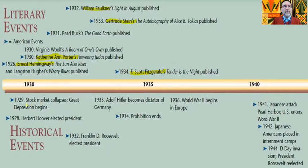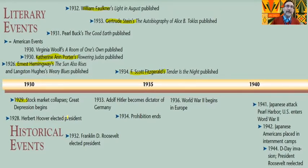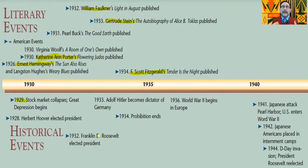By 1929, the Jazz Age ended. Things had been going great economically, a flowering of every business possibility — and then the stock market collapsed, beginning the Great Depression. Herbert Hoover had been elected president and would get blamed for a lot of what didn't happen during the Depression. Hitler came to power just a year before Roosevelt was elected. Roosevelt would become America's only president elected to four terms. No other president had served more than two terms before him. He served four terms through both the Depression and World War II.